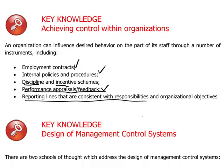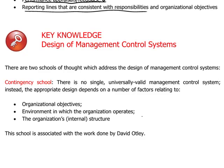With respect to the design of management control systems, it's useful to think about these things according to two general schools of thought. They're not necessarily conflicting with one another — one likes to think there is some truth that can be extracted from both points of view. The contingency school makes perhaps an obvious statement: there is no single universally valid management control system. The appropriate control system has to be adapted to the circumstances.